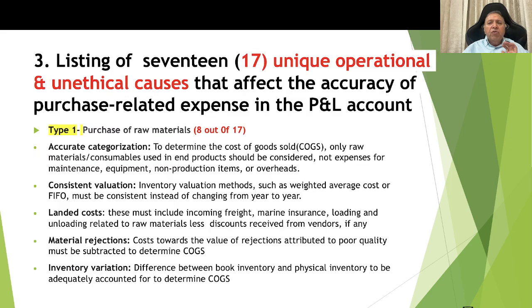Now, listing of 17 unique operational and unethical causes that affect the accuracy of purchase-related expenses in the P&L account. Out of the 17 which are relevant to the purchase function, 8 are attributed to the purchasing of raw material cost and reflecting that in the P&L account. Number 1 out of 8 is accurate categorization: to determine the cost of goods sold, only raw materials and consumables used in the end product should be considered, not expenses for maintenance, equipment, non-production items, or overheads.